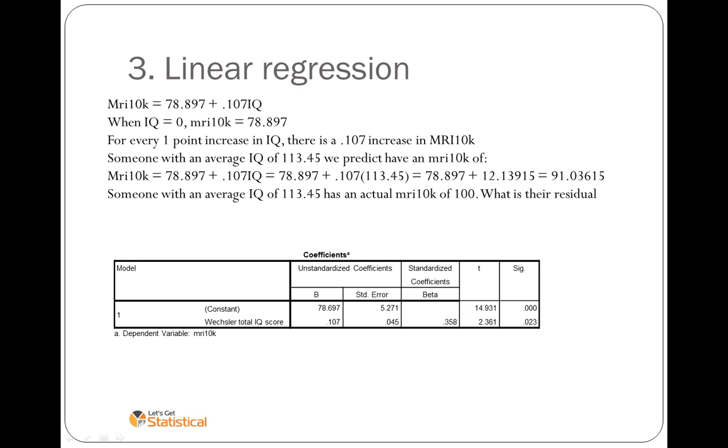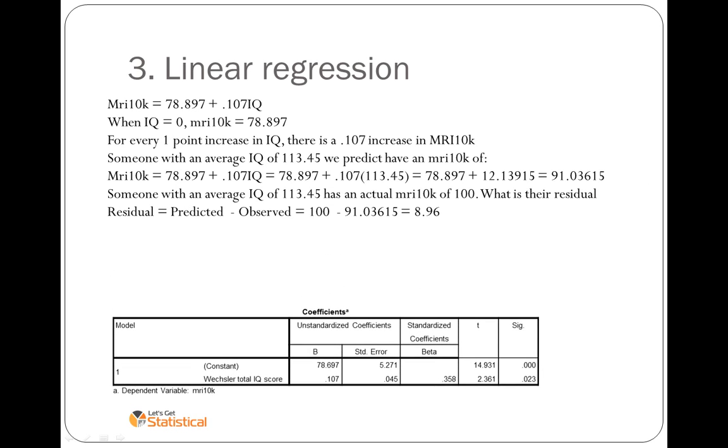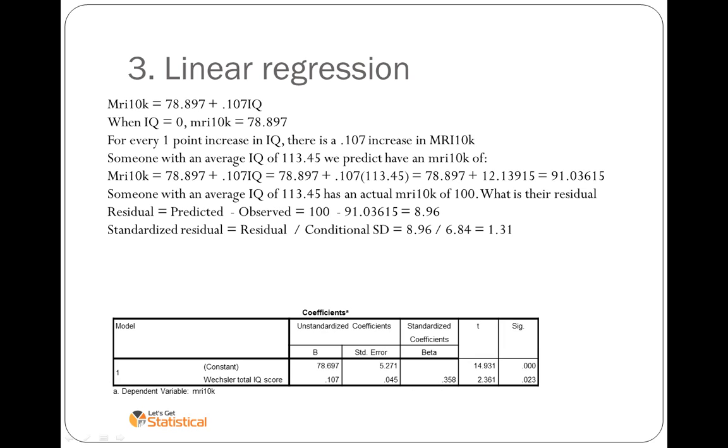We would also say someone with an average IQ who's got an actual IQ of 100, we can predict how far away they're from the regression line, which is 8.96. We can also calculate how many standard deviations their point lies from the line by dividing it by that conditional standard deviation.